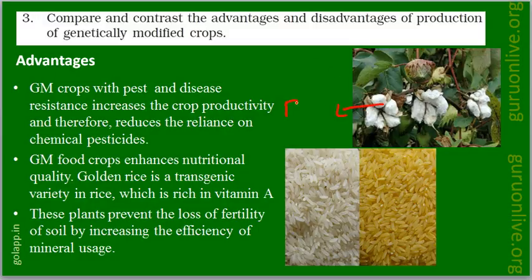This is Bt cotton, which is resistant to bollworm. Second, GM food crops enhance nutritional quality. For example, golden rice is a transgenic variety of rice which is rich in vitamin A.